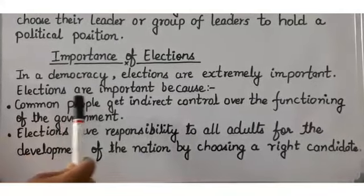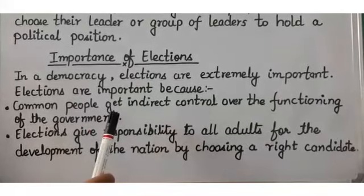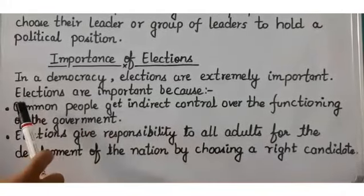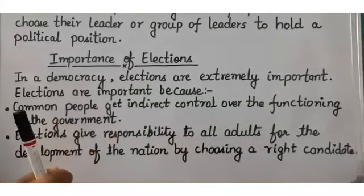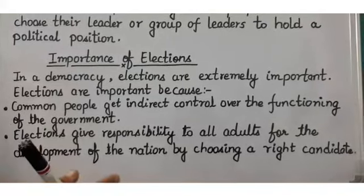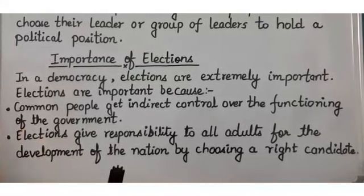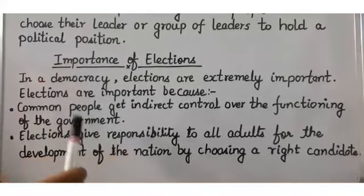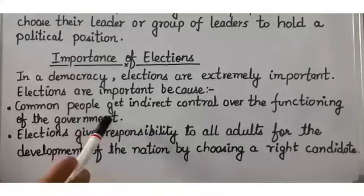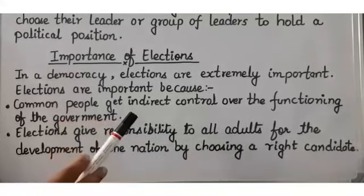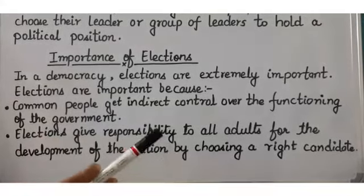Common people get indirect control over the functioning of the government. Just through elections, the common people cannot directly control the function of the government, but indirectly they can. By casting their vote, they can control the function of the government. If the government is not doing their work properly, they can choose the next government as per their choice.